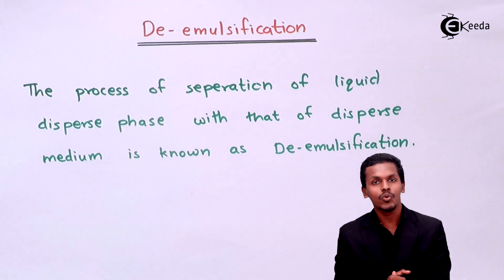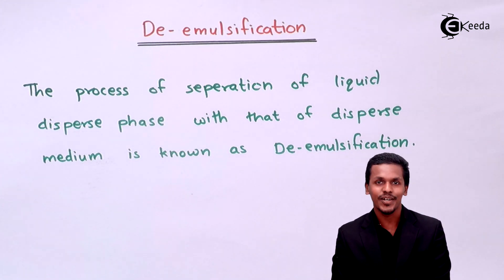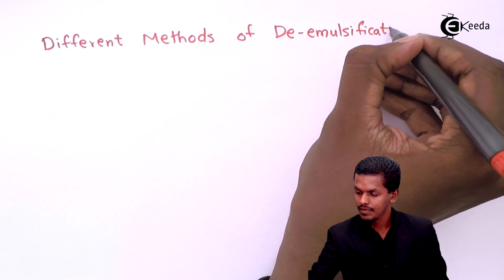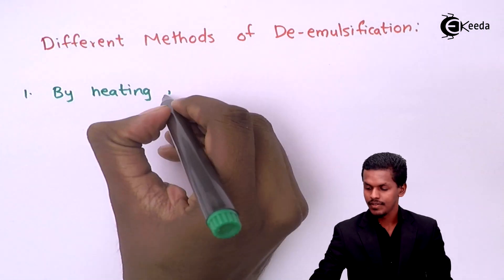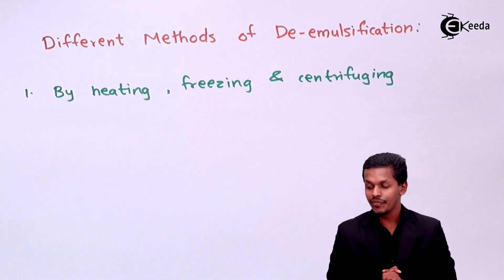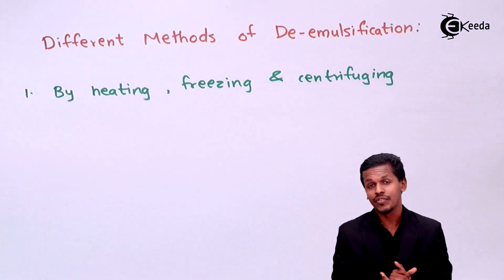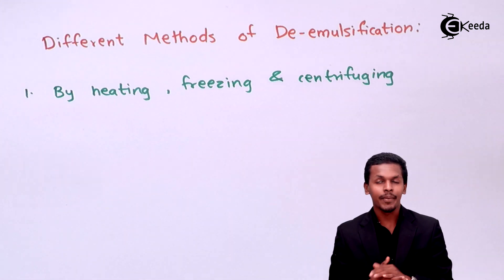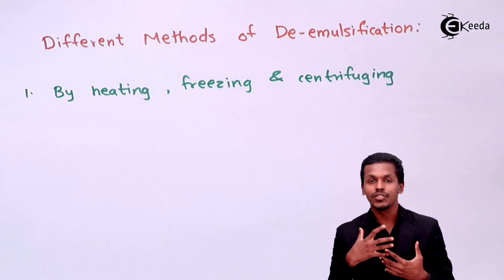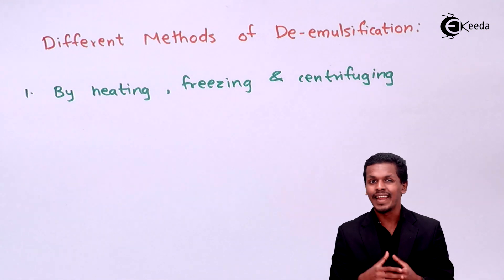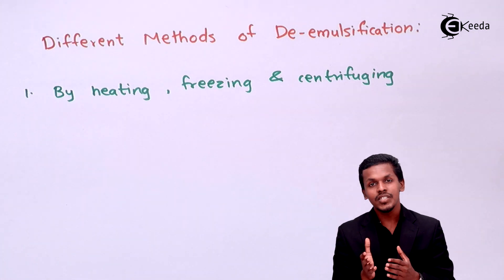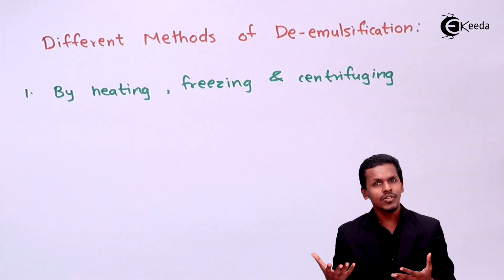The first method is by heating, freezing, and centrifuging. When we heat a particular emulsion, there is a separation of two layers — the emulsion becomes unstable and behaves like a lyophobic sol. In this case, the dispersed phase and the dispersed medium both get separated.